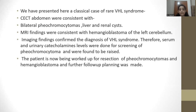We have presented here a classical case of VHL syndrome. CT abdomen was consistent with bilateral pheochromocytomas, liver and renal cysts. MRI findings were consistent with hemangioblastoma of the left cerebellar hemisphere. Imaging findings confirmed the diagnosis of VHL syndrome. Serum and urinary catecholamine levels were done for screening of pheochromocytomas and were found to be raised. The patient is now being worked up for resection of pheochromocytomas and hemangioblastomas, and further follow-up planning was made.